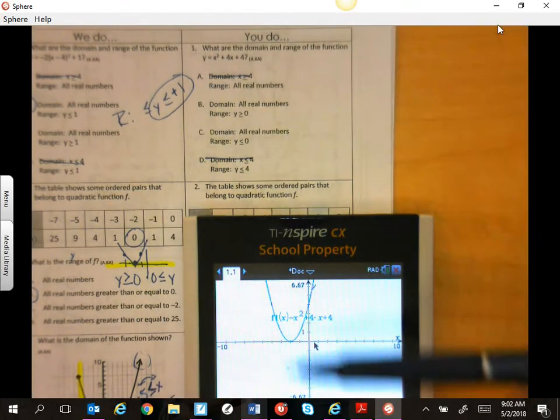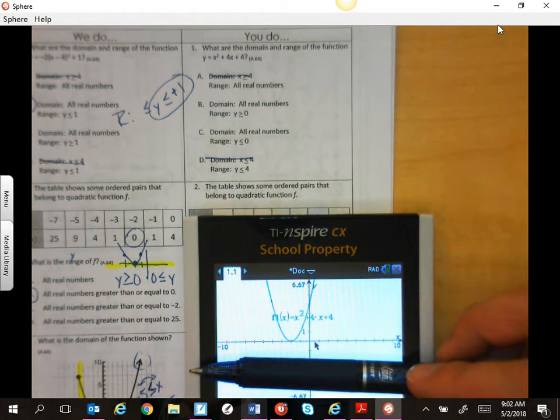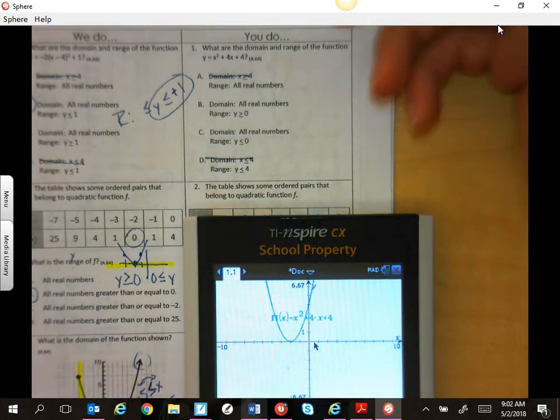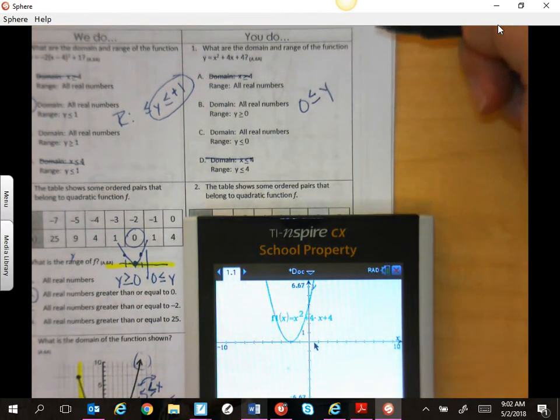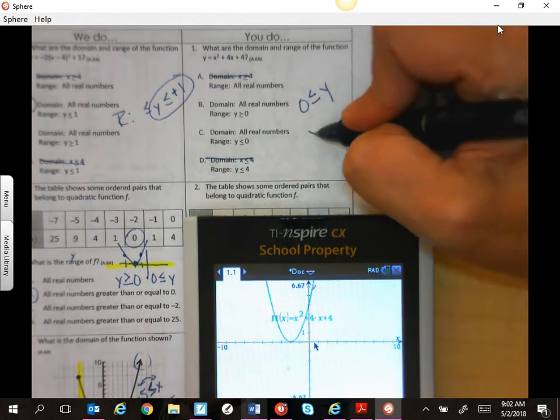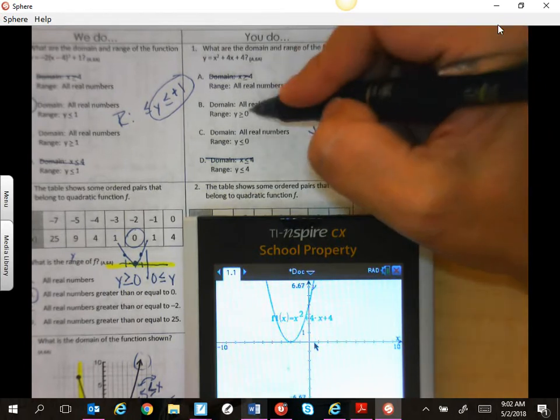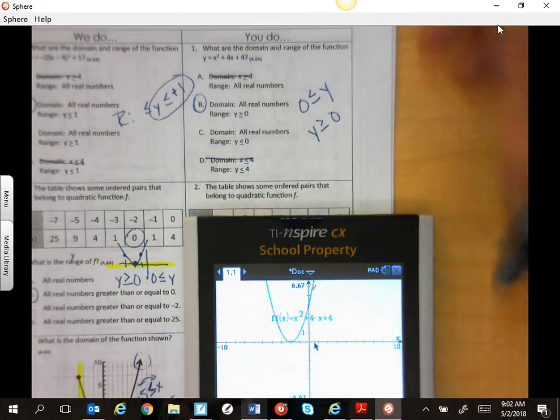It can't be this one. It can't be this one. And the range, again, is everything bigger than zero. Zero is the lowest y value. So, again, they've written it the other way. When you flip-flop it, flip-flop that inequality. So look at your symbols carefully. It's going to be b.